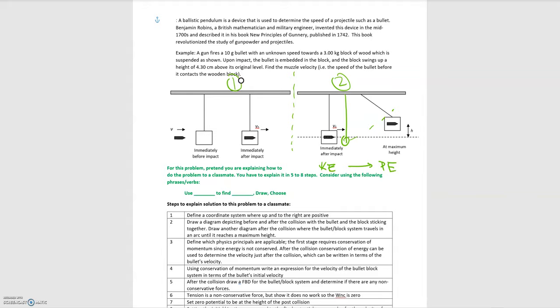Benjamin Robbins came up with this where he wanted to measure the speed of a bullet and exploited physics principles to do that. He didn't have the technology we have now with cameras, so he indirectly measured other quantities and then backtracked to ultimately find the velocity of the bullet.